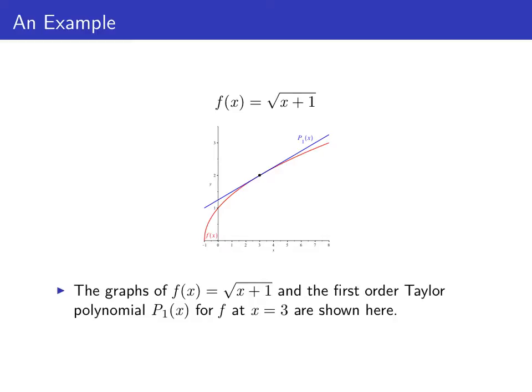The Taylor polynomials for f centered at x equals three will be good approximations to f as long as we stay close to the base point x equals three. You can see from the graph of p sub one and f of x that as long as we stay close to x equals three, p sub one of x is pretty close to f of x.